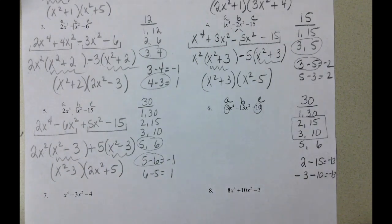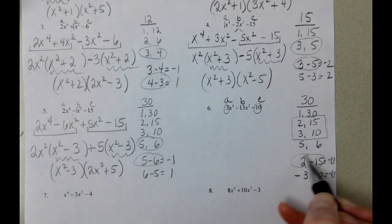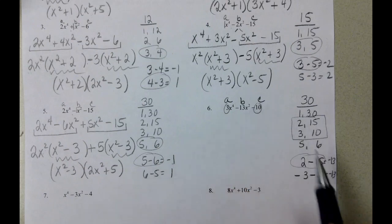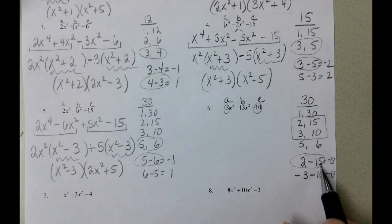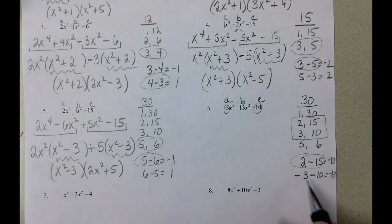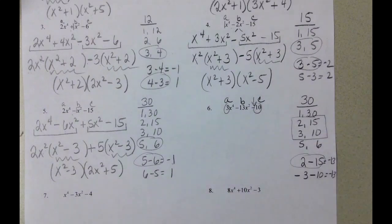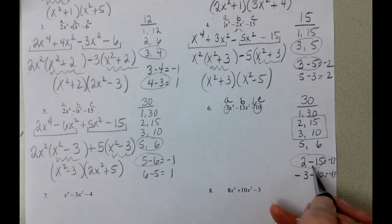And we actually need the first choice because our last sign is negative. So when we multiply positive 2 times negative 15, we would get a negative value. Whereas if we took negative 3 times negative 10, we would get a positive value. And our last sign here is negative, so the first one.